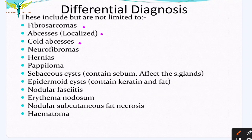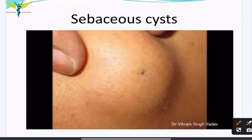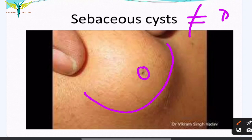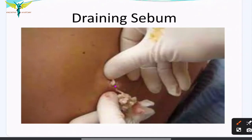Differential diagnoses include fibrosarcomas, abscesses, cold abscesses, neurofibromas, hernias, papillomas, sebaceous or epidermoid cysts, nodular fasciitis, erythema nodosum, nodular subcutaneous fat necrosis, and hematoma. Here you can note the punctum on a sebaceous cyst — this punctum differentiates a sebaceous cyst from a dermoid. From the punctum, the sebum is drained.